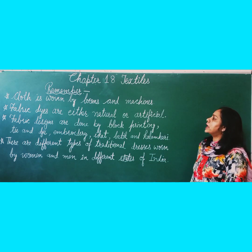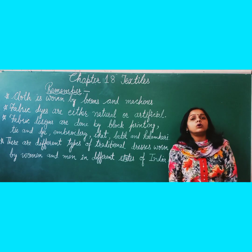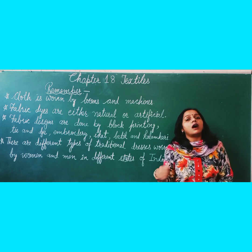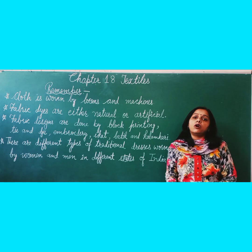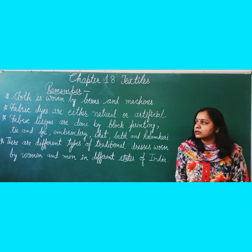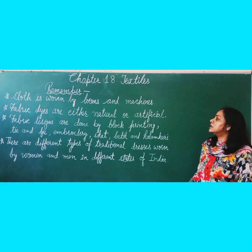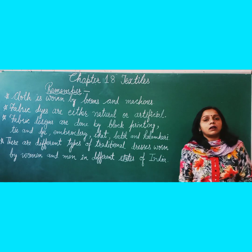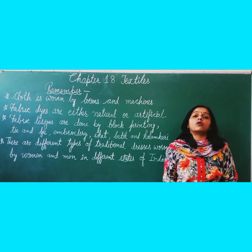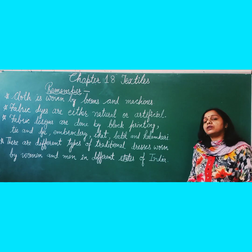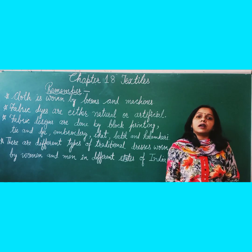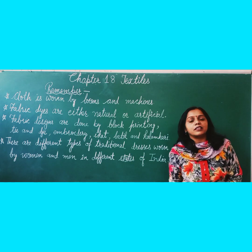Fabric is woven by looms and machines. There are two ways to weave fabric — one is by a loom, and the second is by machines. Fabric dyes are either natural or artificial. Natural dyes come from plants, and artificial dyes are synthetic dyes made chemically.